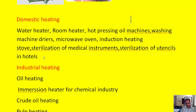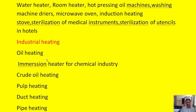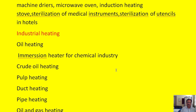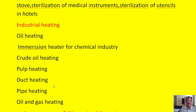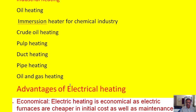Industrial heating uses high power and operates in bulk. Applications include oil heating, immersion heaters for chemical industry, crude oil heating, bulb heating, duct heating, pipe heating, and oil and gas heating used in oil refineries.